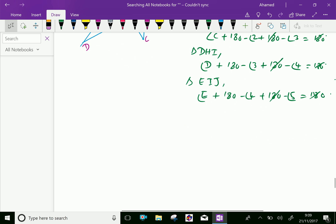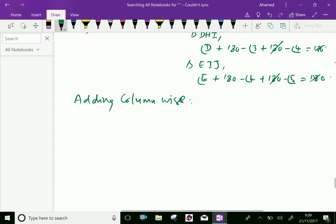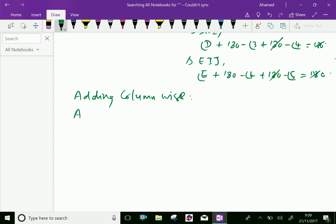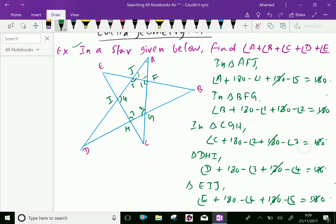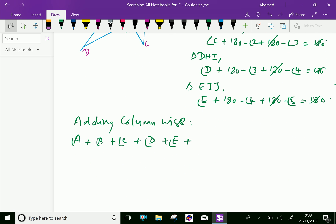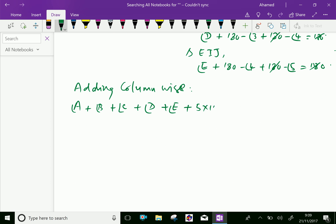Now, adding column wise, we get angle A plus angle B plus angle C plus angle D plus angle E plus. So here there are 5 180 degrees. So 5 into 180 minus,